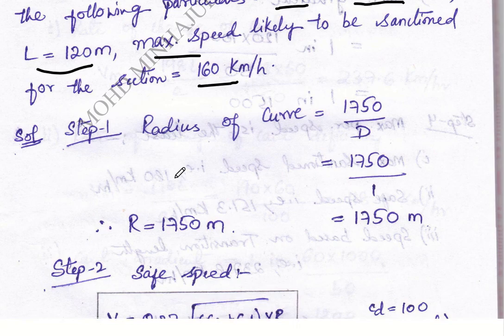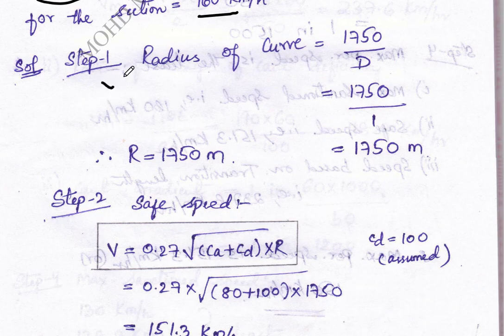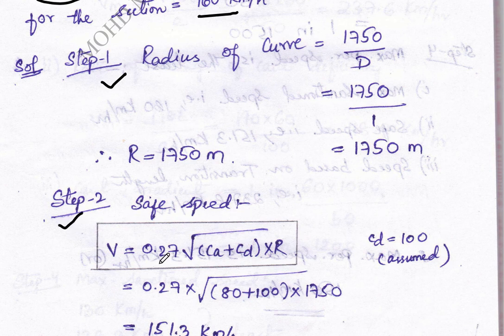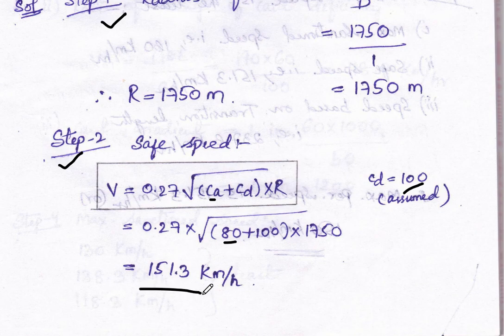Coming to the solution: as before, step one is to calculate radius of curvature. Step two: calculate safe speed using the formula V = 0.27 × √((CA + CD) × R), where CD is 100 mm (standard) and CA is 80 mm, which equals E given in the question. Substituting the values gives the safe speed.